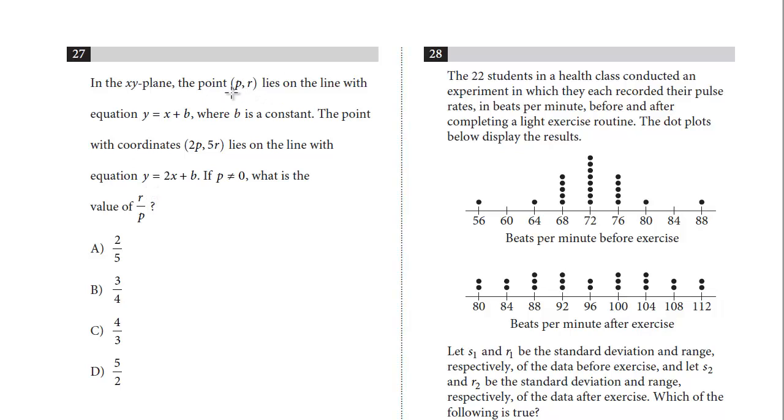So we've seen this before. We're given a point. Now, this is not a point with an actual number, like 2, 6, but nothing changes. Anytime you have a point that lies on a line, you can substitute that coordinate point. It'll satisfy the equation.